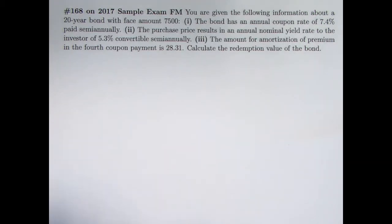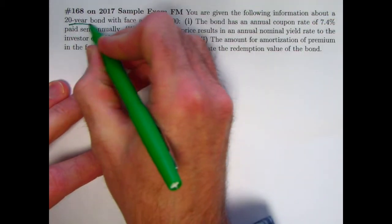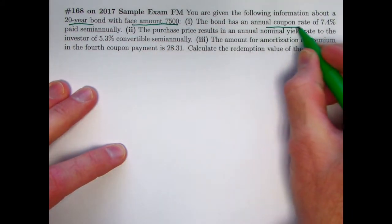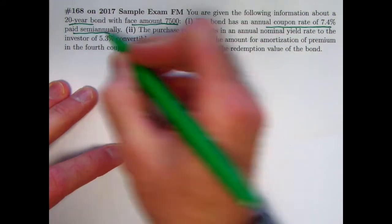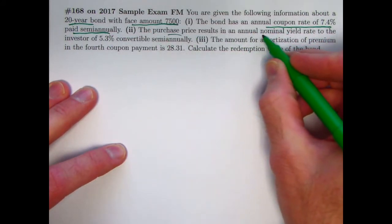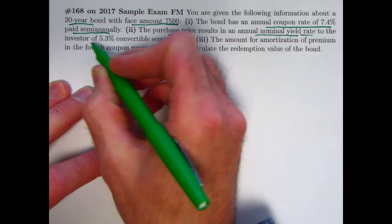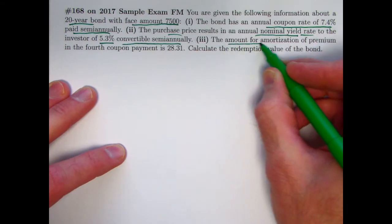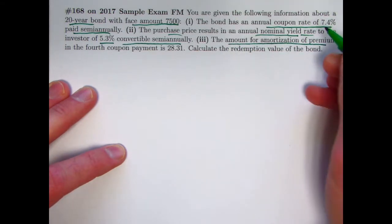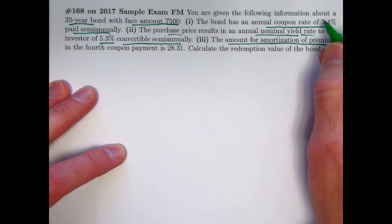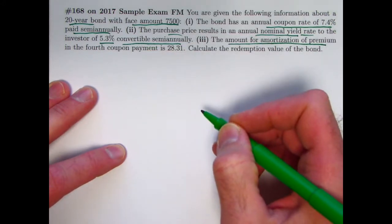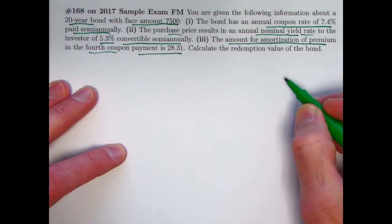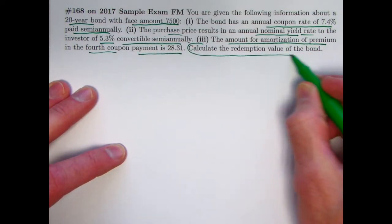Here is the problem. You are given following information about a 20-year bond with a face amount of $7,500. The bond has an annual coupon rate of 7.4% paid semi-annually. Purchase price results in an annual nominal yield rate to the investor of 5.3% convertible semi-annually. The amount of amortization of the premium, this is a premium bond bought higher than the redemption value because the coupon rate is higher than the yield rate. The amount of amortization of the premium in the fourth coupon payment is $28.31. The goal is to calculate the redemption value of the bond.